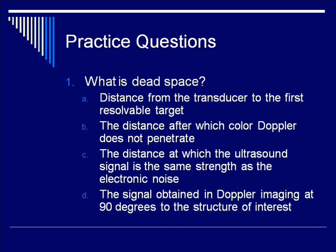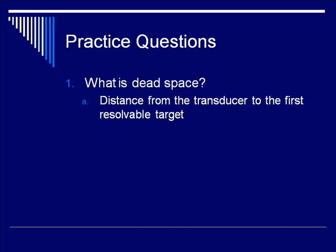Let's do a few practice questions. Number 1: What is dead space? Is it A) the distance from the transducer to the first resolvable target; B) the distance after which color Doppler does not penetrate; C) the distance at which the ultrasound signal is the same strength as the electronic noise; or D) the signal obtained in Doppler imaging at 90 degrees to the structure of interest? The answer is A. Dead space is the distance from the transducer to the first resolvable target.